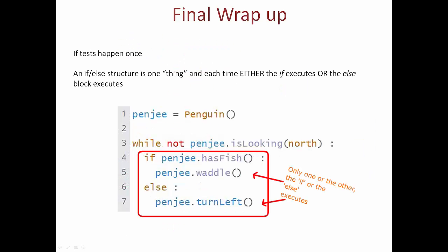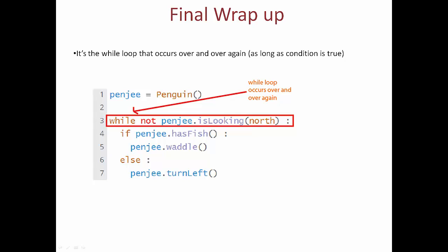As a final wrap-up, let's remember that if tests happen once, and that an if-else structure is one unit, and each time the computer will either execute the if part or the else part, but never both. It's only the while loop that occurs over and over again as long as its condition is true, with the if statement and else statement being chosen once at every iteration.